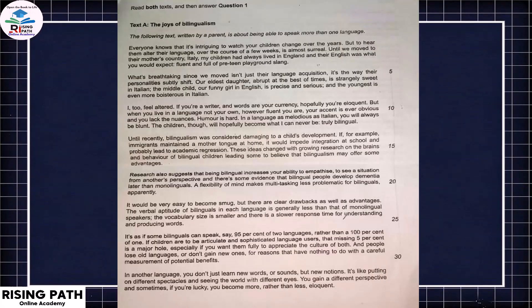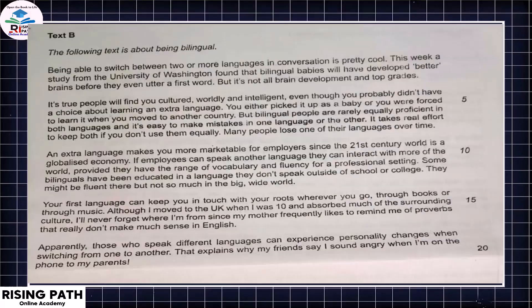Now let's attempt a question on the informal letter. Read both texts and then answer question number one. This is our directed writing task and as we know the format — we have two texts to go through. This text is about the joys of bilingualism, written by a parent about being able to speak more than one language. Text B is also about being bilingual. Our first step is to read both texts.